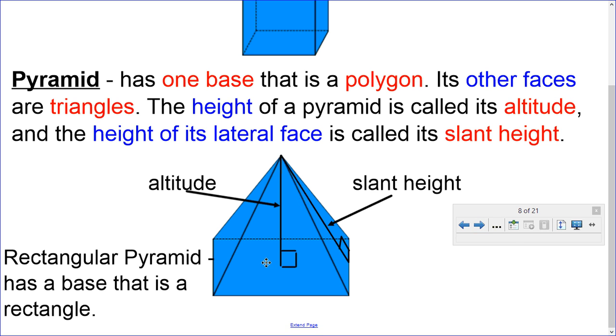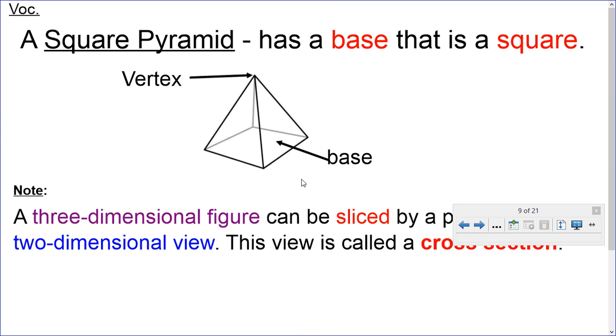A rectangular pyramid has a base that is a rectangle. As I said, there are many different bases that a pyramid can have, such as a rectangle or square base pyramid. And speaking of the square base pyramid, it has a base that is a square. The vertex or apex is your top point up here, and your bottom is a square.